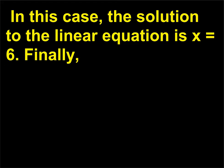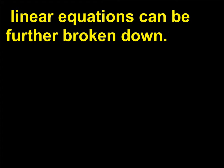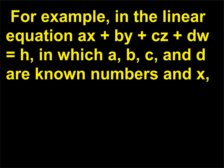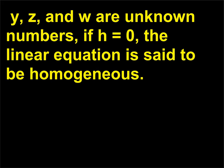Linear equations can be further broken down. For example, in the linear equation ax + by + cz + dw = h, in which a, b, c, and d are known numbers and x, y, z, and w are unknown numbers, if h equals 0, the linear equation is said to be homogeneous.